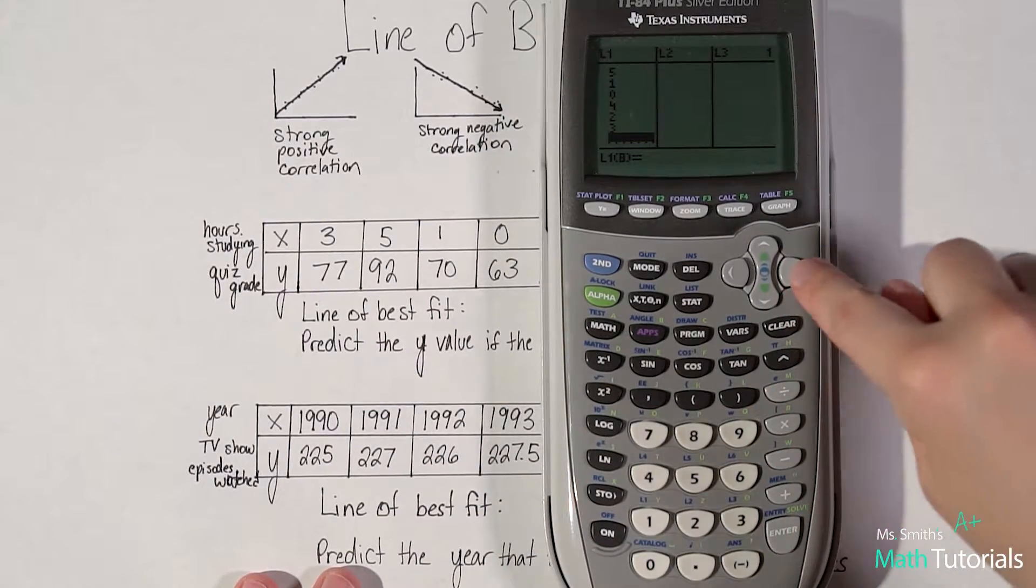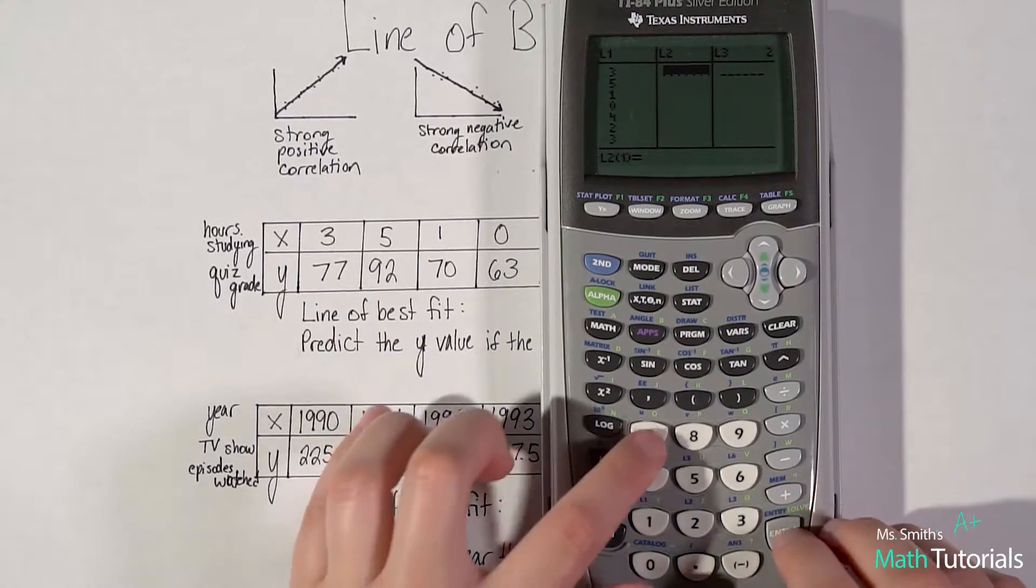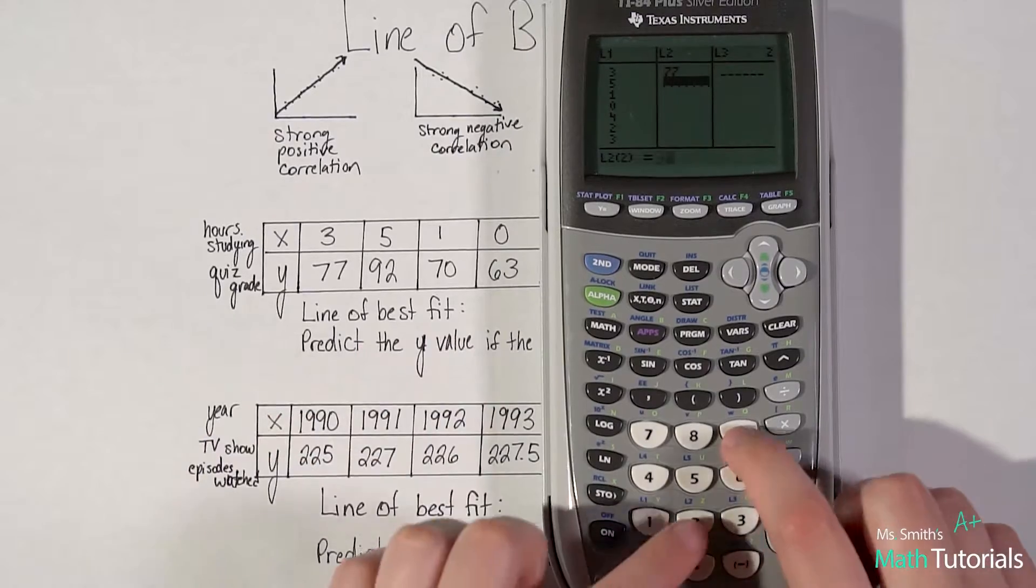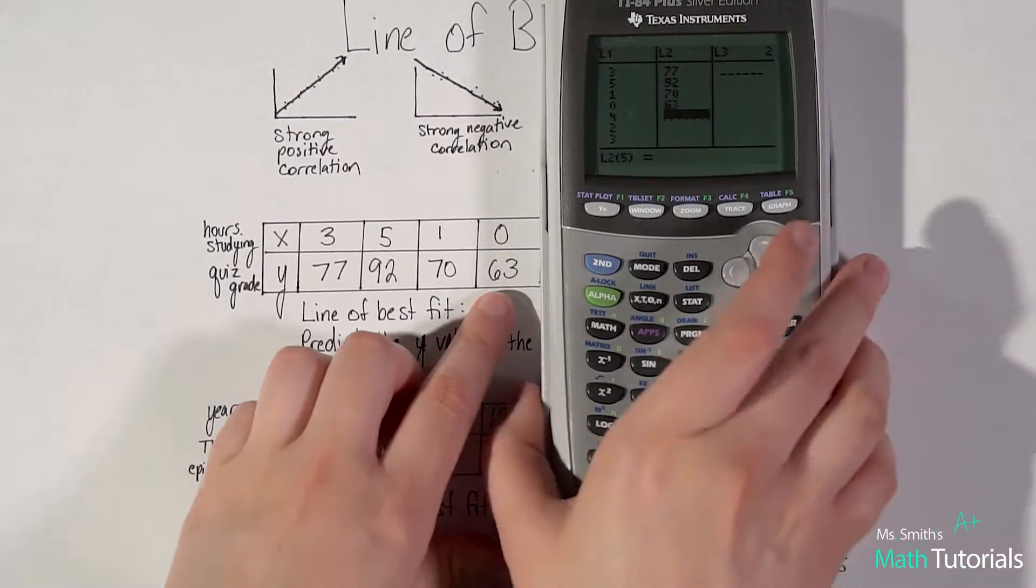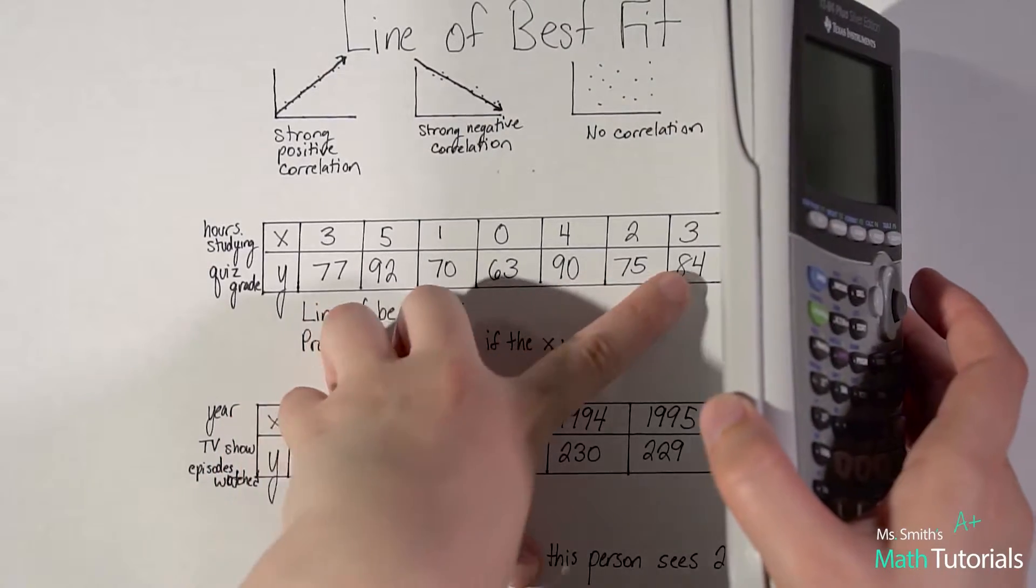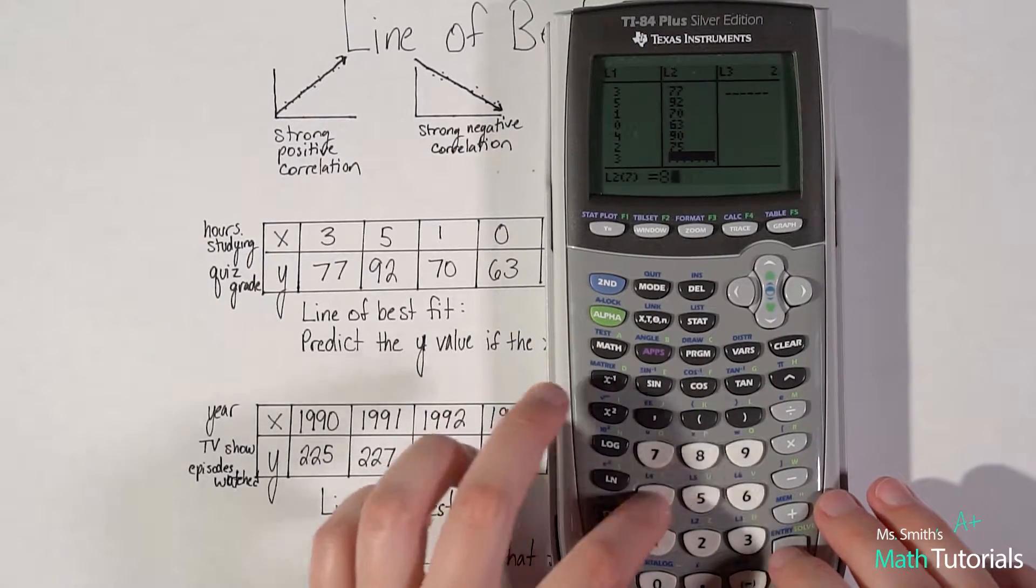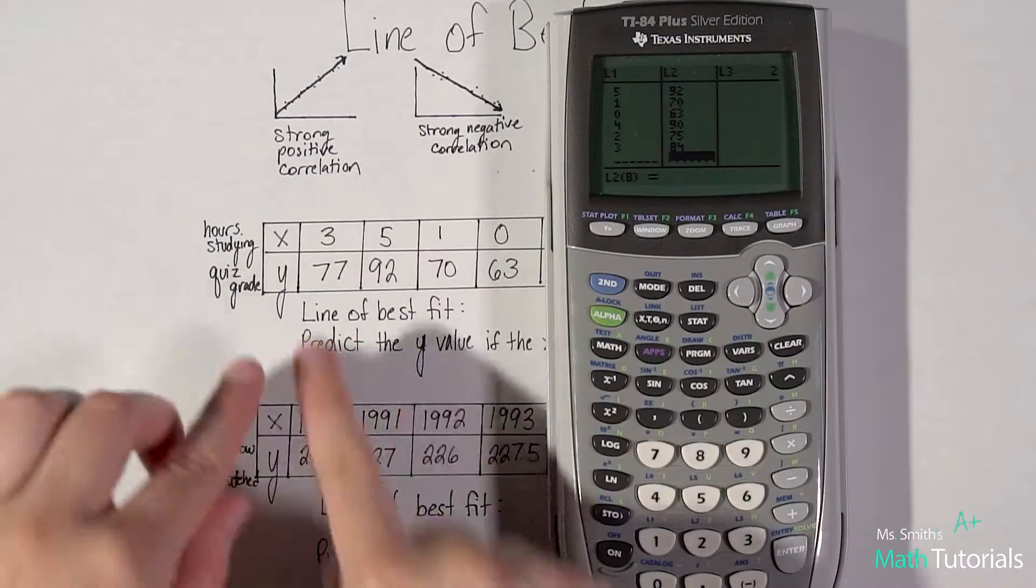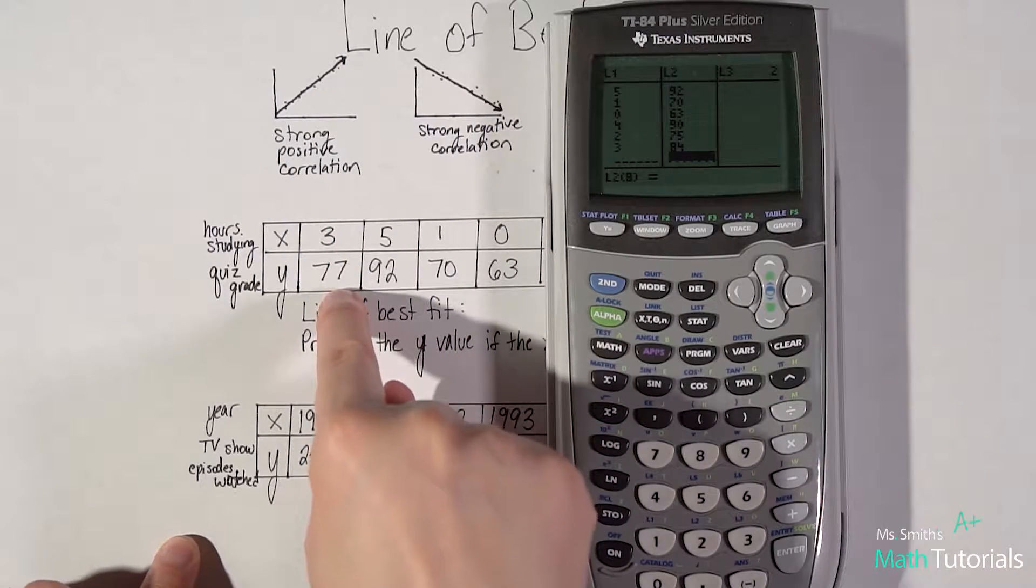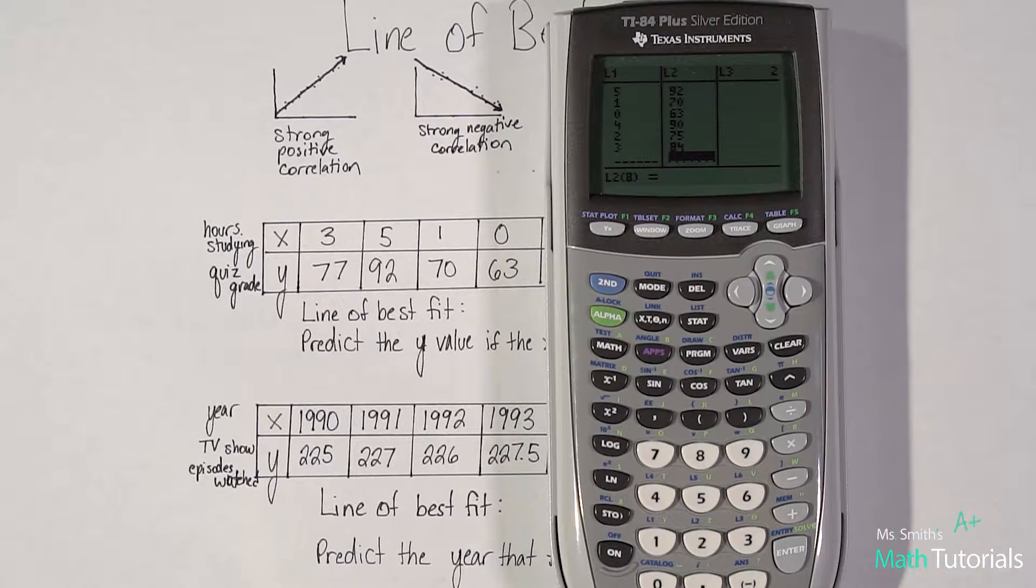Now, just move your arrow to the right, and that'll take you over to your list two. So now, I'm going to do all my y values. 77, 92, 70, 63, 90, 75, 84. Now, it's important to note that they do line up, and it is important that this three goes with that 77. This order does matter. You can't just throw them all in in any order that you want.